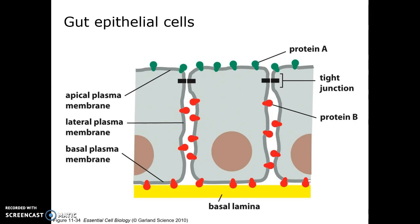Septicemia is a technical term for blood poisoning. Something like 200,000 people per year get septicemia and about 10% of them die — about 20,000 Americans per year — so we definitely have a strong selective pressure for having these tight junctions, also known as occluding junctions.